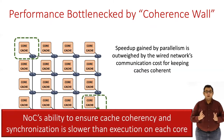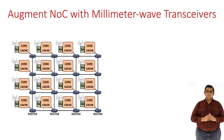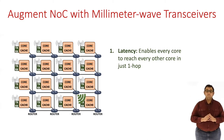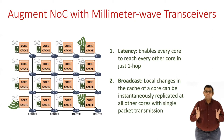To overcome this, computer architects have proposed to augment the wired interconnect with millimeter wave transceivers to create a wireless network on chip. This gives us two major advantages: first, lower latencies since every core is reachable from every other core in just a single hop; and second, wireless naturally supports broadcast and multicast transmissions, so any local change in the cache of a core can be instantaneously replicated at all other cores.